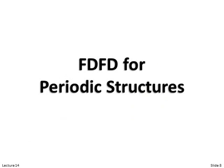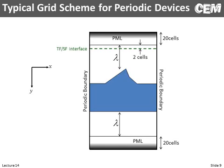Now I want to talk about Finite Difference Frequency Domain for periodic structures. A lot of this won't be a surprise to you, but I do want to step you through what could go wrong and what are some good practices. Here's the basic grid setup: we're going to have our device somewhere in the middle of the grid, and we're going to use periodic boundary conditions on the left and the right, so whatever materials are on the left look very similar to what's on the right, and this would essentially repeat indefinitely in the horizontal direction.